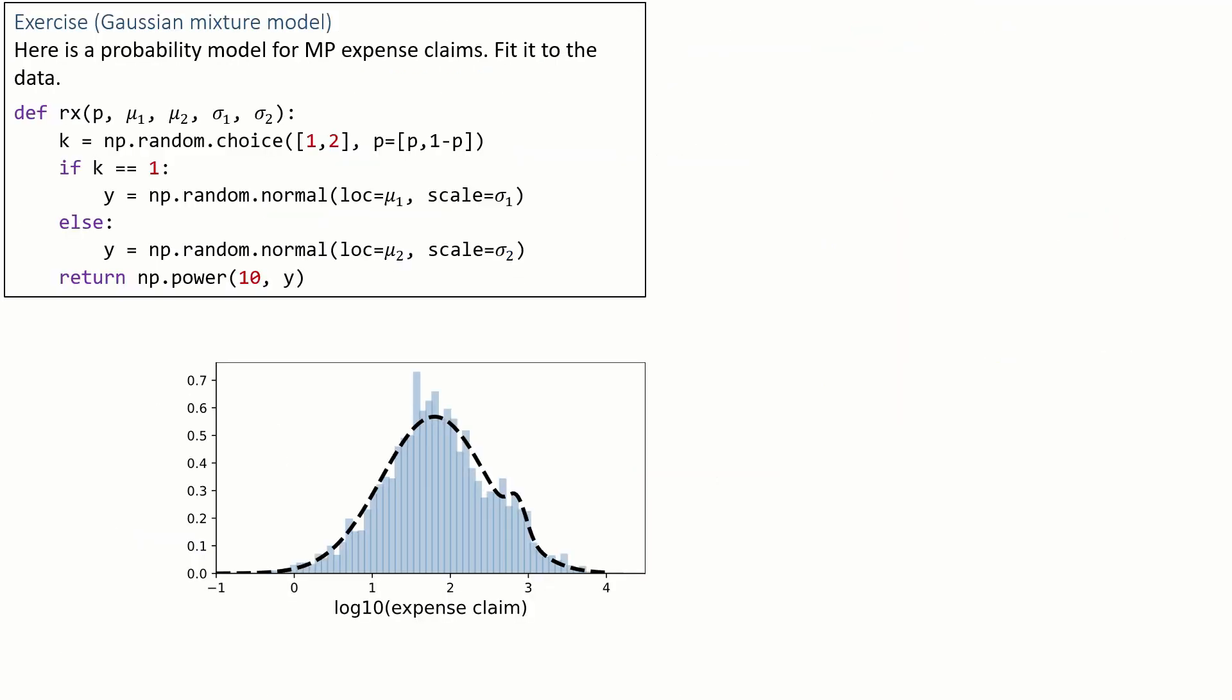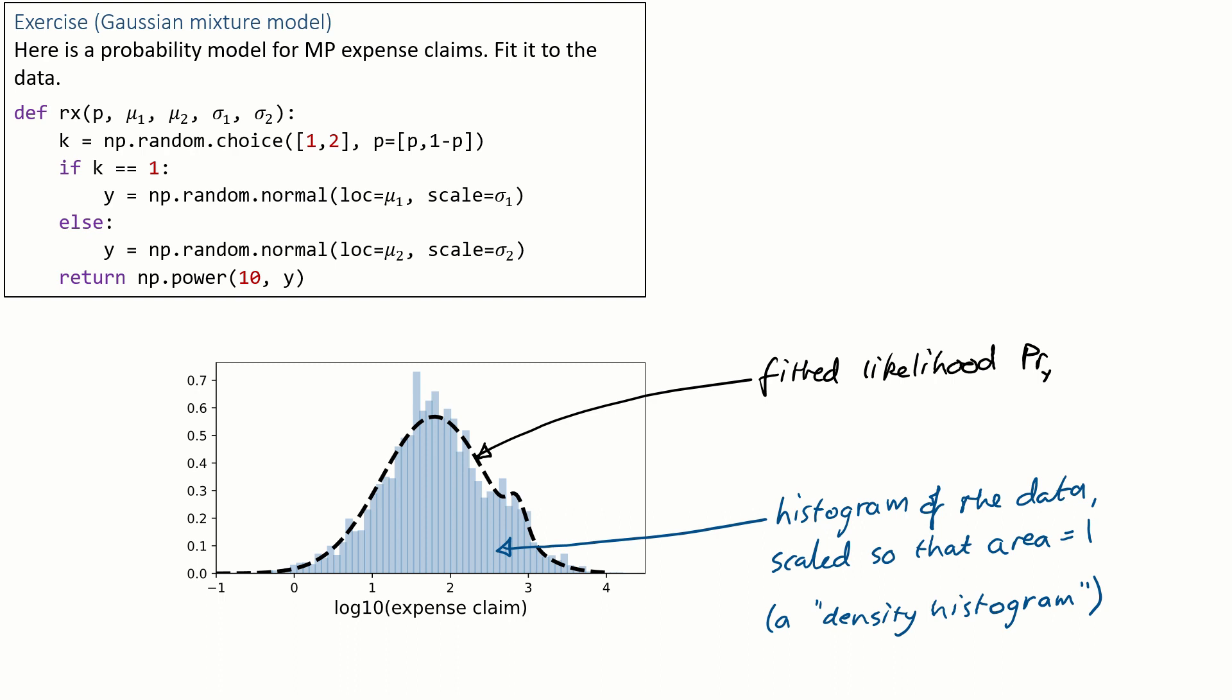Now let's look at the final answer. Here's a histogram of the original data. I scaled it to make the total area of the histogram equal to 1, which makes it easy to compare it to a probability density function, which we know has to integrate to 1. And if we rescale the histogram in this way, it's called a density histogram. And the black line is the fitted likelihood function, i.e. the likelihood function for y.